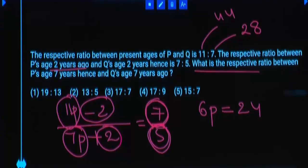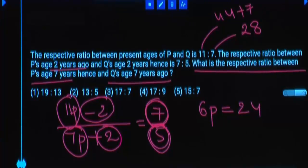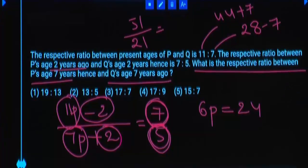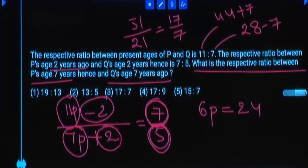Now, what is the respective ratio between P's age 7 years hence and Q's age 7 years ago? After 7 years, P will be 51. 7 years ago, Q will be 21. Ratio 51 by 21 — cancel with 3: 17 times by 7 times. Third option is the answer.